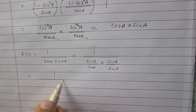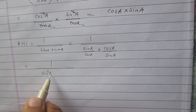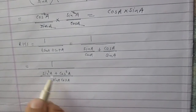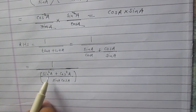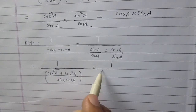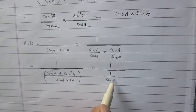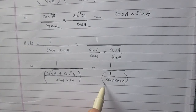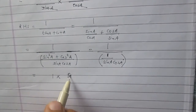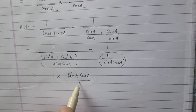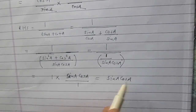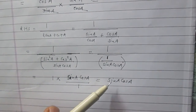After simplifying the denominator, we will get sin squared A plus cos squared A, and according to the trigonometric identity sin squared A plus cos squared A equals 1. So it is 1 upon 1 divided by sin A cos A. In order to simplify, we multiply the numerator with the reciprocal of the denominator, giving 1 multiplied by sin A cos A divided by 1, which is nothing but sin A cos A.